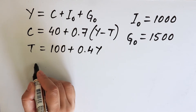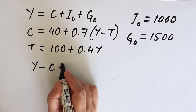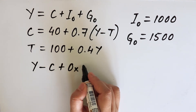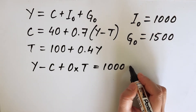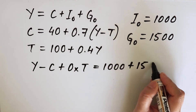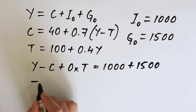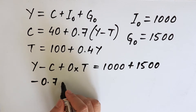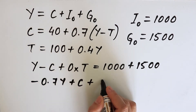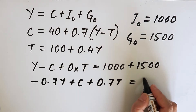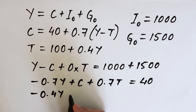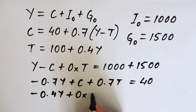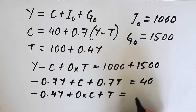Therefore we end up with the equation Y minus C plus 0·T equals 1000, since I0 is 1000 and G0 is 1500. The second equation will be minus 0.7Y plus C plus 0.7T equals 40. The third equation will be 0.4Y plus 0·C plus T equals 100.